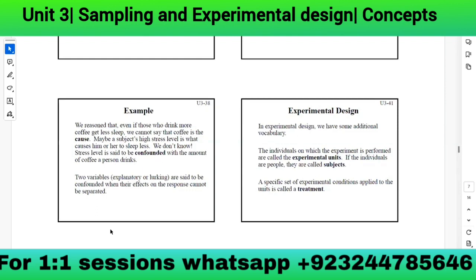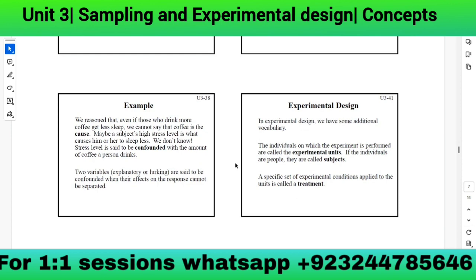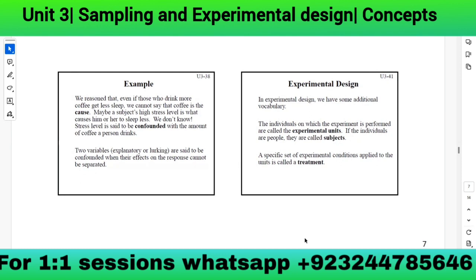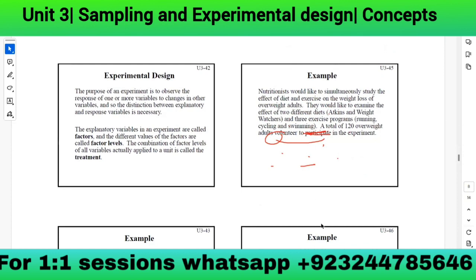In experimental design, we have additional vocabulary. The individuals on which an experiment is performed are called experimental units. If the individuals are people, they are called subjects. A specific set of experimental conditions applied to the units is called a treatment. The purpose of an experiment is to observe the response of one or more variables to changes in other variables.